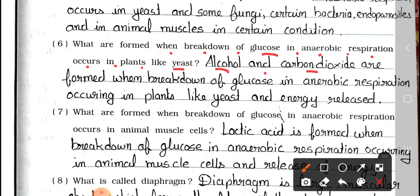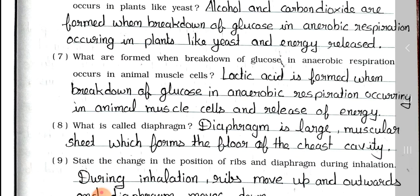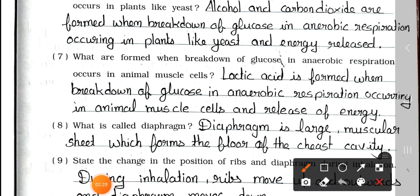Answer: Alcohol and carbon dioxide are formed, along with energy released, when breakdown of glucose occurs in anaerobic respiration in plants like yeast. Question number 7: What are formed when breakdown of glucose in anaerobic respiration occurs in animal muscle cells?